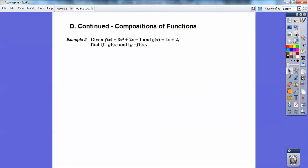Let's see. So given, example number 2, given f of x equals 3x squared plus 2x minus 1, and g of x equals 4x plus 2, find f of g of x, and that's what this says. That's an O. That means f of g of x, and then g of f of x. What this means is I'm going to plug the g function into the f, and over here I'm going to plug the f function into the g. Let's see what I did here.